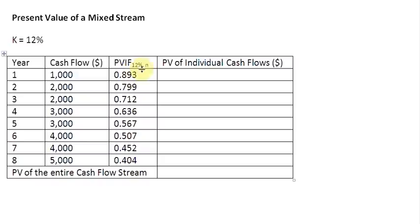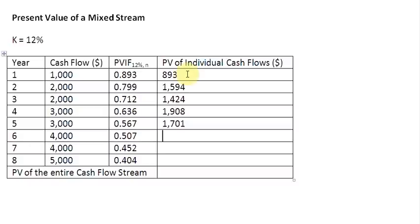What we need to do now is multiply these individual cash flows in each year with their corresponding PVIF. So when you multiply 1000 by 0.893, you get 893. The product of 2000 and 0.799 is 1,598. The next one is 1,424. The next one is 1,908. After that, 1,701. Then 4,000 times 0.507 is 2,028. Then 4,000 times 0.452 is 1,808.